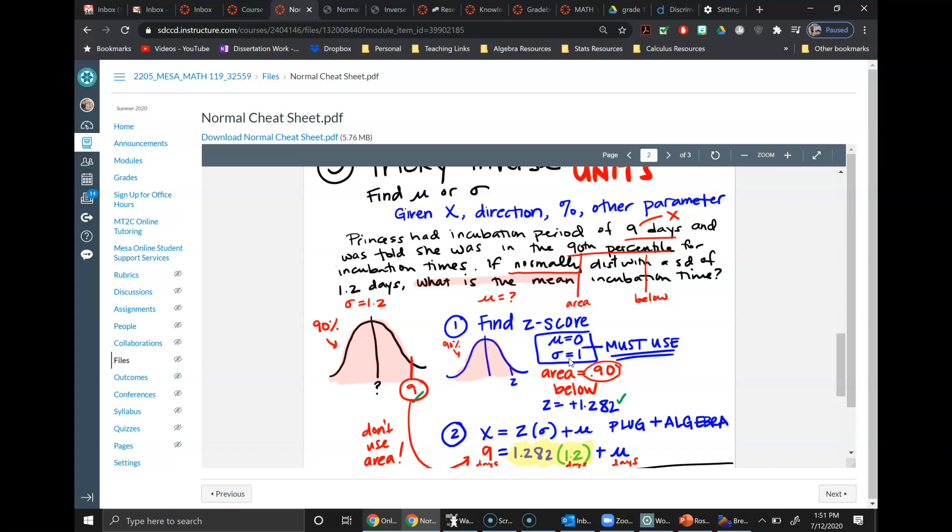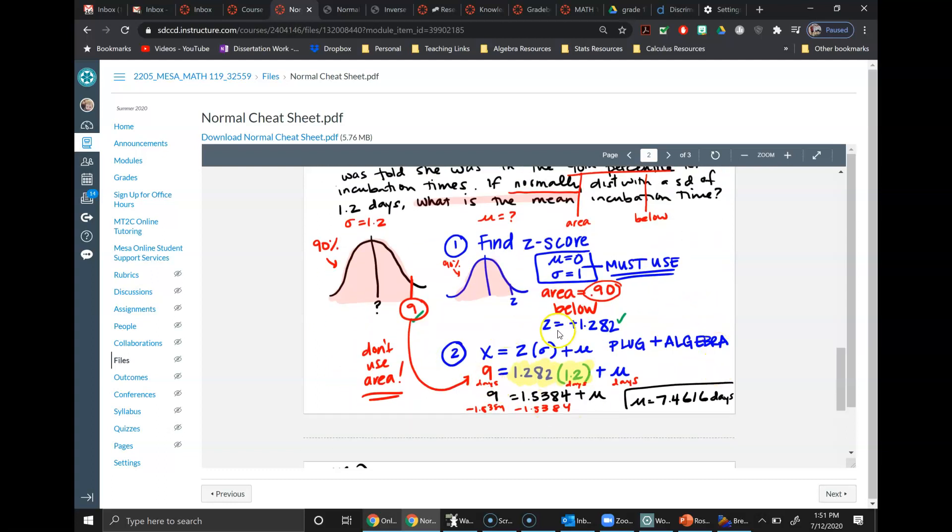To join a z-score, you have to use a mean of zero and standard deviation of one. It doesn't matter if you have a given value for some other, for one of these you will have one of these given. Just know you're going to use zero and one. And then again, be careful here about your directional.